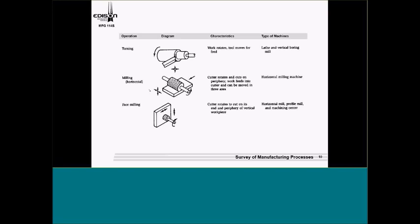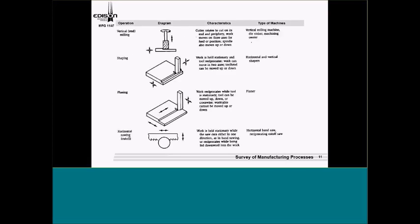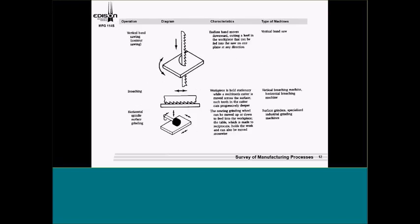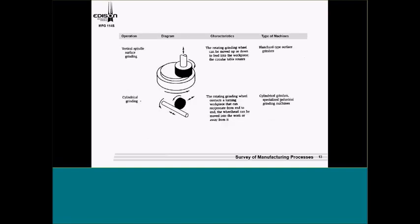I always talk about processes: turning, milling, face milling — I have videos to show all of this. Vertical milling, shaping. Students sometimes have trouble understanding the difference between a shaper and a planer, so I show them on the video. Sawing, cutoff, vertical band sawing, broaching — with broaching I discuss keyseating. Spindle grinding, vertical surface grinding, electric surface grinders — we supplement with videos. Cylindrical grinding, centerless grinding, and the difference between drilling and reaming: when do we drill, when do we ream, how much stock do you leave?